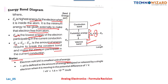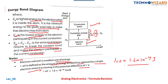Note: the electron volt is the smallest unit of energy. One electron volt is defined as the amount of energy accepted or released by a single electron when it is moving through a potential difference of one volt. One electron volt equals 1.6 × 10⁻¹⁹ joules. The charge of one electron is also 1.6 × 10⁻¹⁹ coulombs.